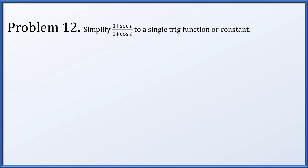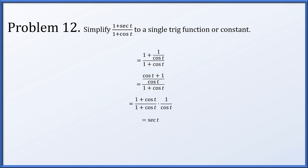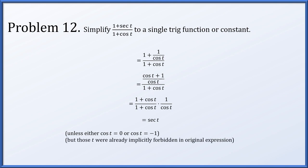For problem 12, we simplify (1 + sec t)/(1 + cos t). Replacing sec t with 1/cos t and giving the numerator a common denominator of cos t, we get (cos t + 1)/cos t all divided by (1 + cos t). Factoring (1 + cos t) from both numerator and denominator, those cancel, leaving 1/cos t = sec t. The restrictions cos t ≠ 0 and cos t ≠ −1 were already forbidden in the original expression.